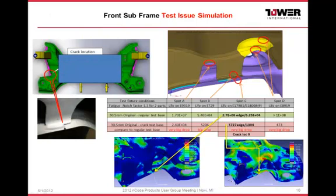This is another example where, not only were we fixing the cradle cracks, but we also had an opportunity to work with the test fixture which cracked during the testing schedule and then created new cracks in the cradle. We tried changing the boundary conditions of the test fixture, evaluated the cracks, and gave suggestions to the test engineers to fix the test fixture.